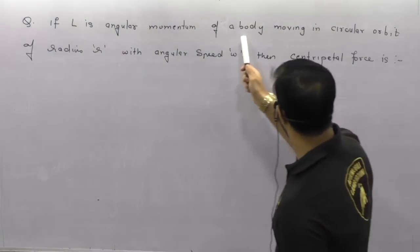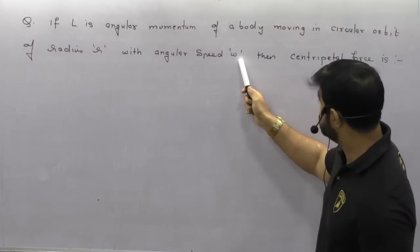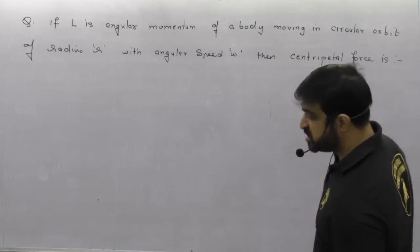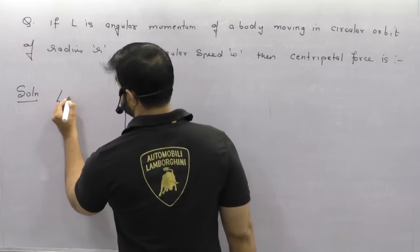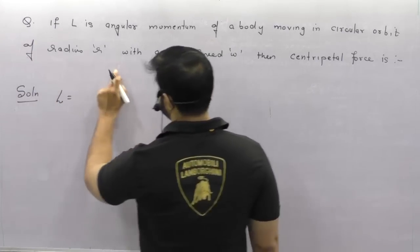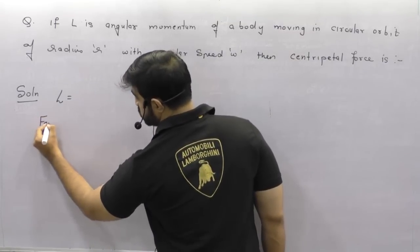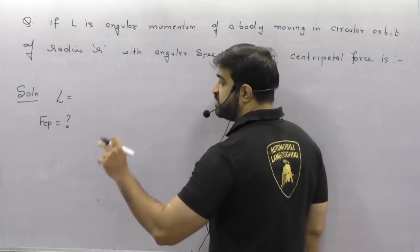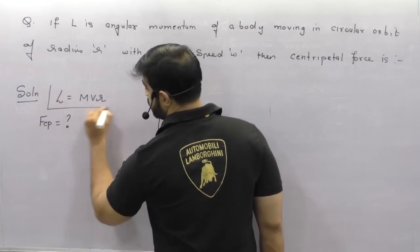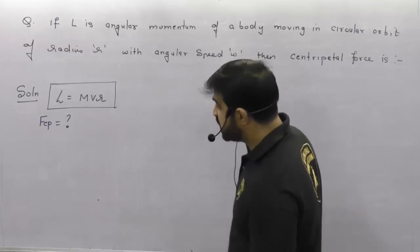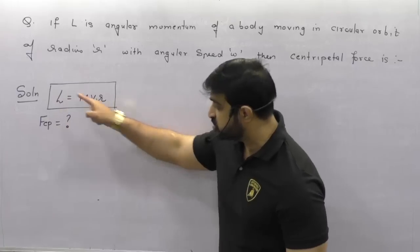Next question: if L is the angular momentum of a body moving in a circular orbit of radius R with angular speed omega, then the centripetal force is? They have given angular momentum of a body moving in circular orbit of radius R with angular speed omega, and they have asked for centripetal force. I need the answer in terms of angular momentum. Angular momentum is L = MVR.